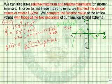So the point (1, -2) gives us a relative minimum, and the point (-1, 2) gives us a relative maximum.